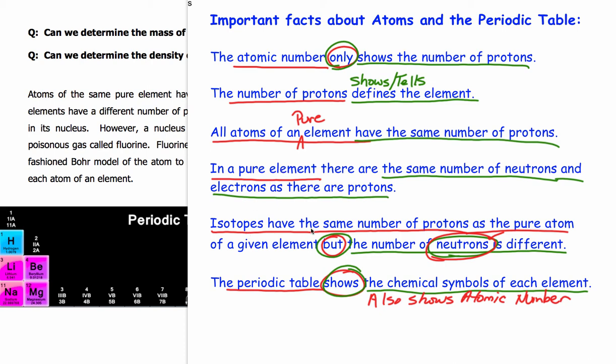Isotopes have the same number of protons as the pure atom of a given element, but the number of neutrons is going to be different. So the particle count will be different in the atomic mass, which is the particle count, will be different.